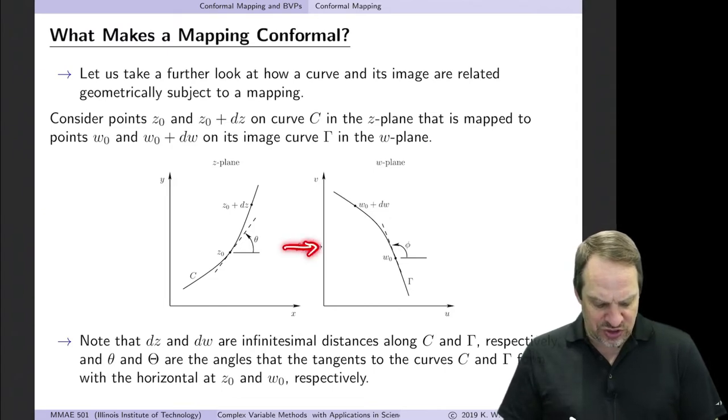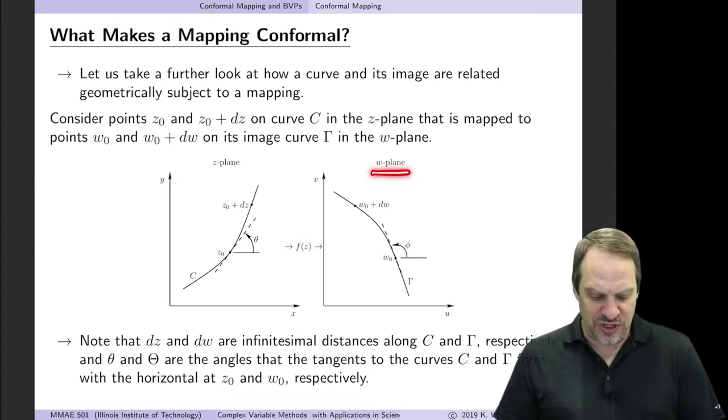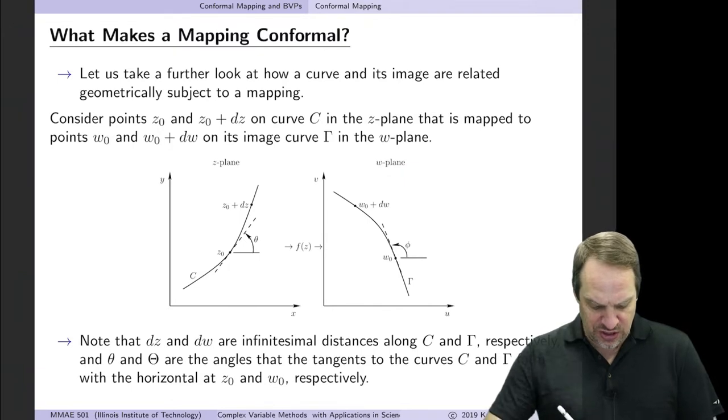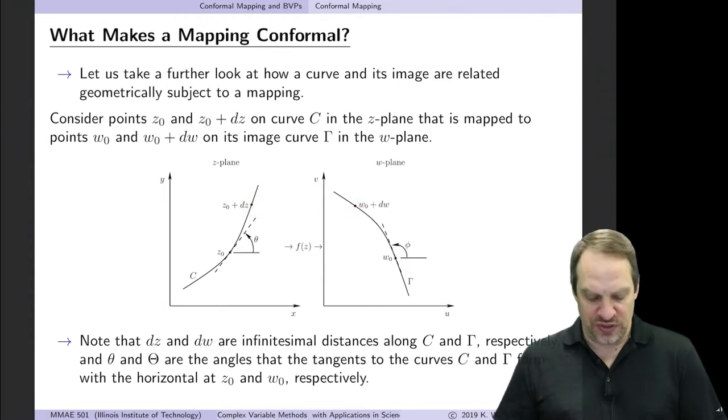And then under our transformation, f of z, we have the image in the w-plane. And the image of our curve C is going to be this curve γ. Likewise, z₀ has an image point w₀, and z₀ plus dz is going to have an image point w₀ plus dw.